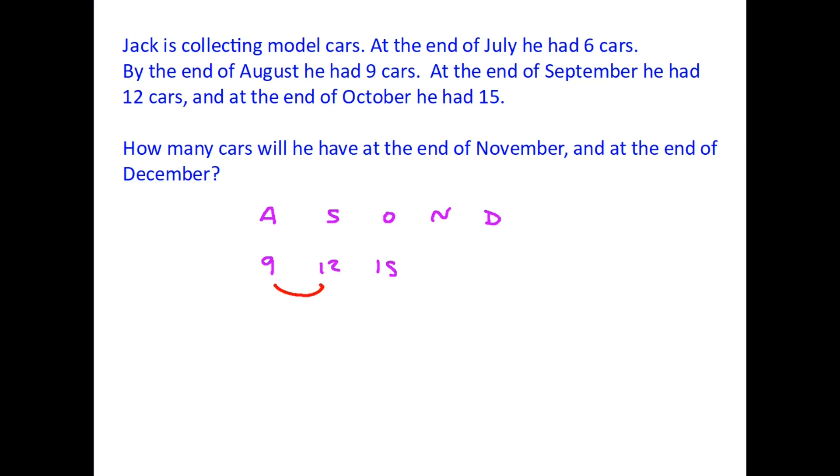So we are going from 9 to 12 from August to September that means it's gone up by 3 and 12 to 15 from September to October so that's also gone up by 3. So we have a pattern rule and that rule is plus 3. So let's use the rule to find November, so 15 cars plus 3, by the end of November he's going to have 18 and use plus 3 again to find the total for December and we find that is 21.